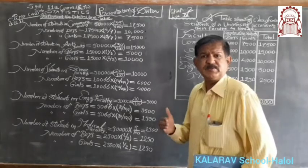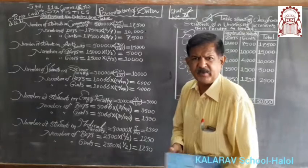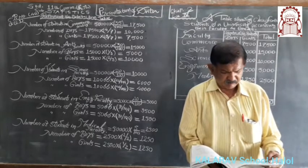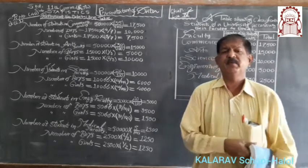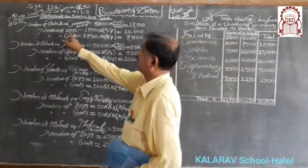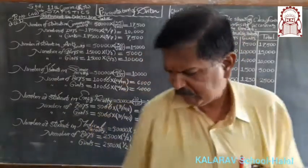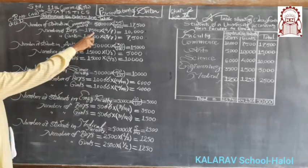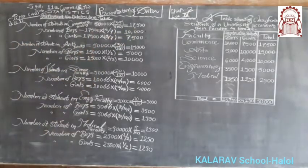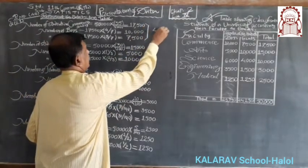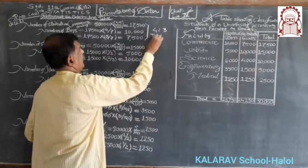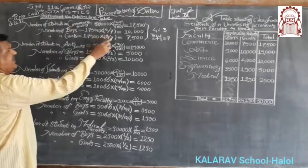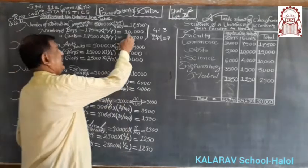Now in each faculty, we find the number of boys and girls. The ratio of boys to girls in commerce faculty is 4 is to 3, and the total ratio becomes 4 plus 3 equal to 7. Therefore, number of boys equals 17,500 multiplied by 4 by 7, and number of girls equals 17,500 multiplied by 3 by 7, which gives 10,000 boys and 7,500 girls.